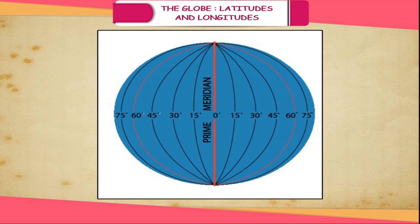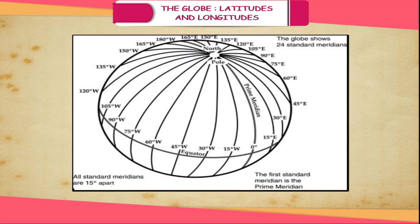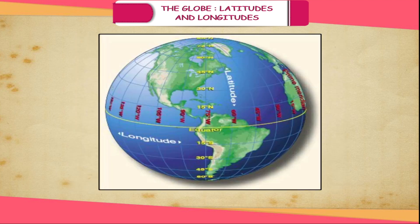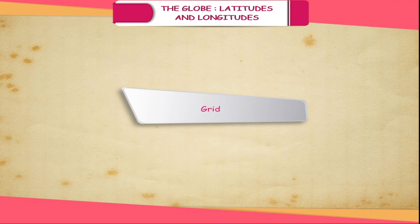The prime meridian divides the Earth into the Western and Eastern Hemispheres. The 180 degree longitude in each hemisphere coincides with each other; this longitude, with slight modifications, is called the International Date Line.